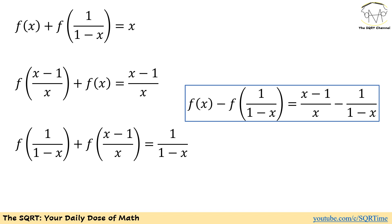Let's review what we have. We have f(x) appearing in two of the three equations, f(1/(1-x)) appearing in two of the three equations, and f((x-1)/x) appearing in two of the three equations. So basically we have three variables and three equations — a solvable system.